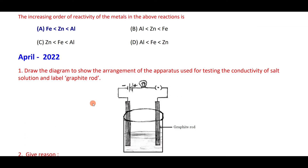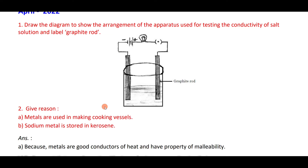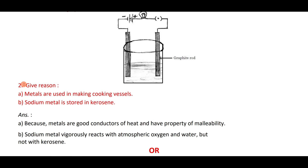Draw the diagram of the apparatus for testing the conductivity of salt solution and label graphite electrodes — important diagram to practice. Metals are used in making cooking vessels because they are good conductors of heat and have the property of malleability. Sodium is stored under kerosene because it is highly reactive — it reacts with atmospheric oxygen and water in a highly exothermic reaction.